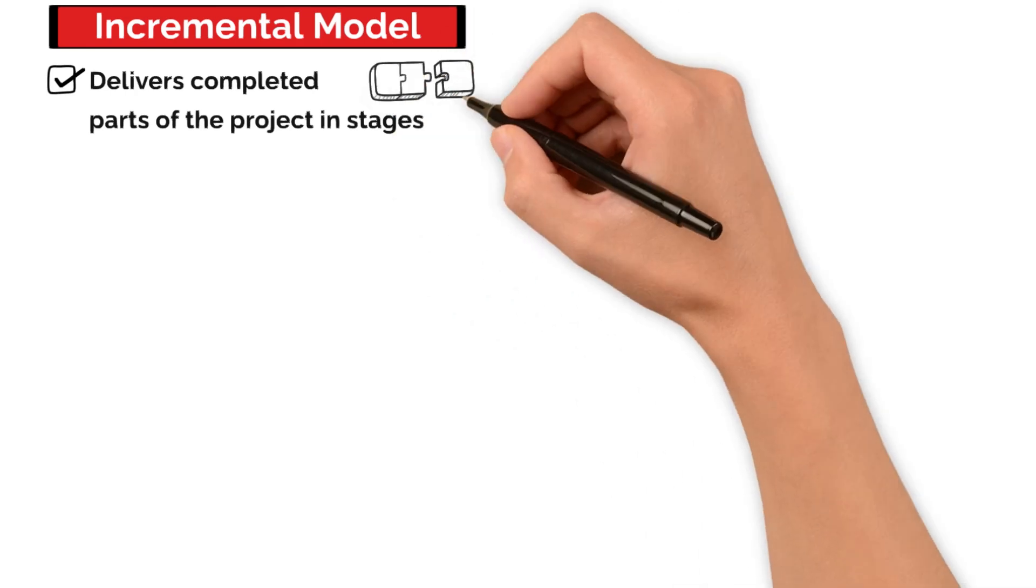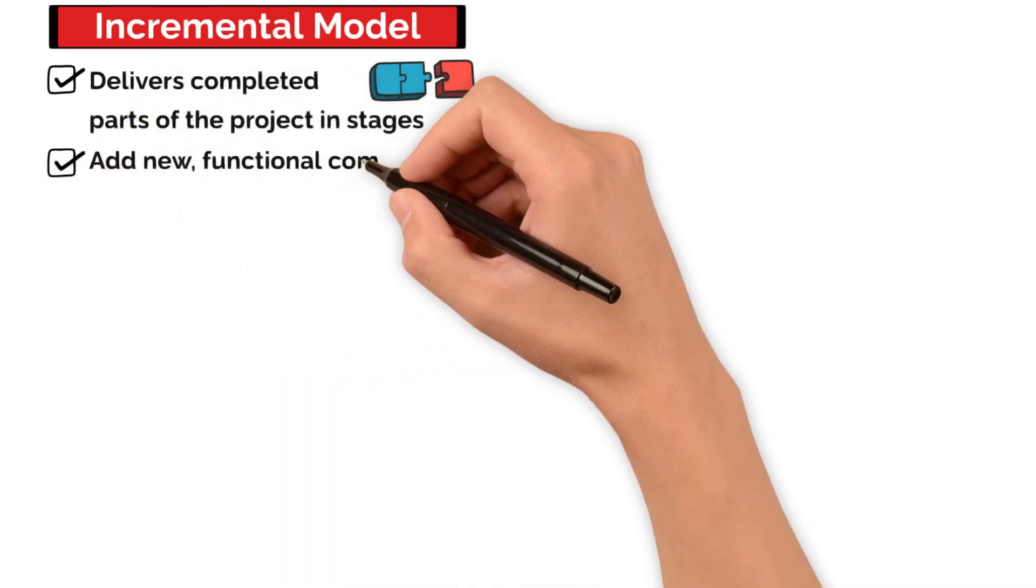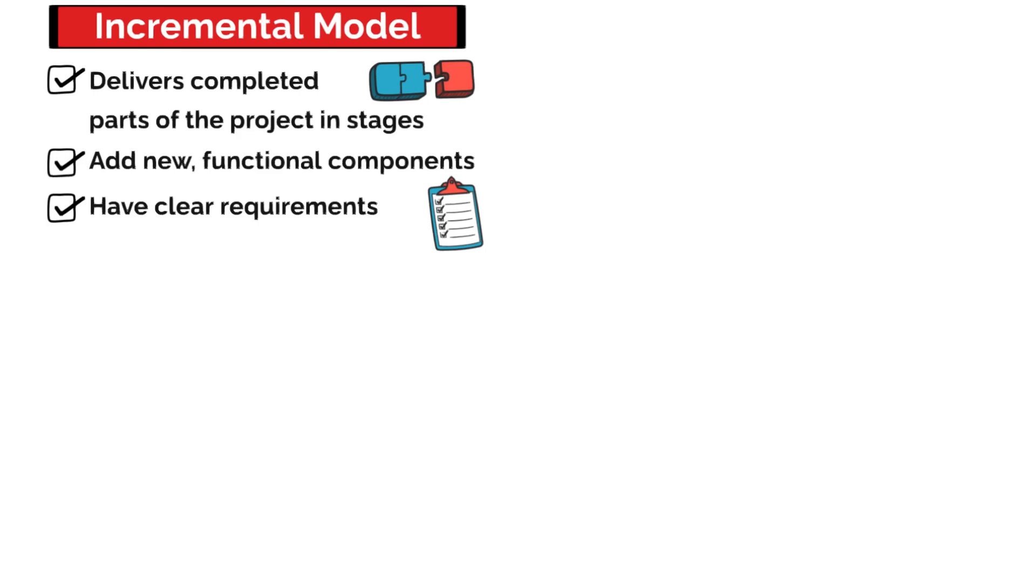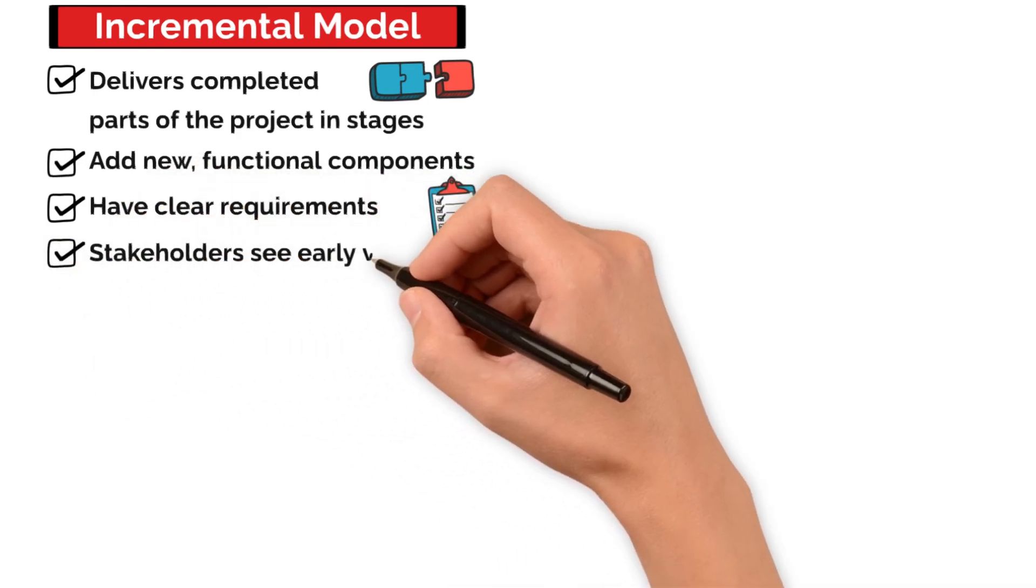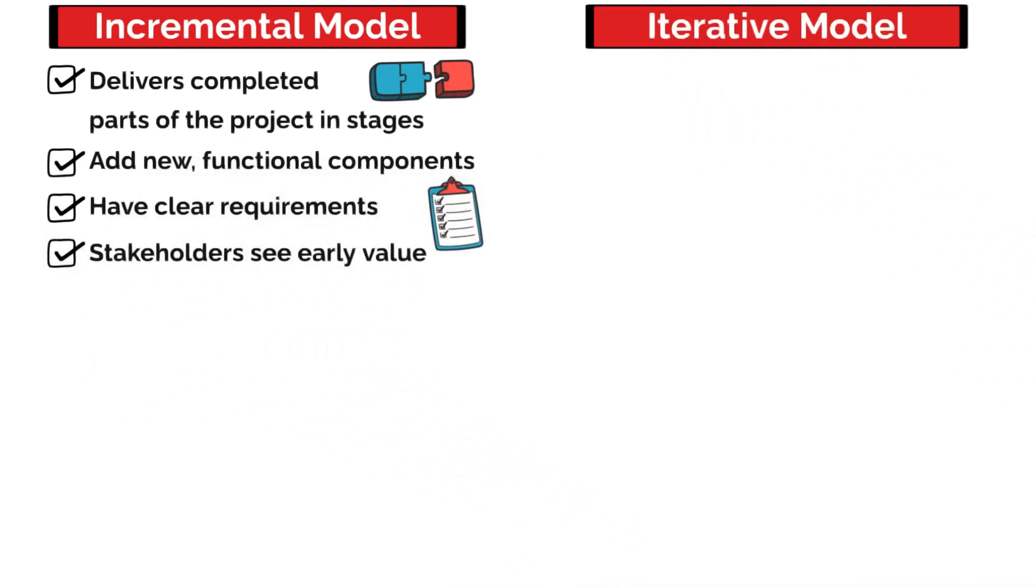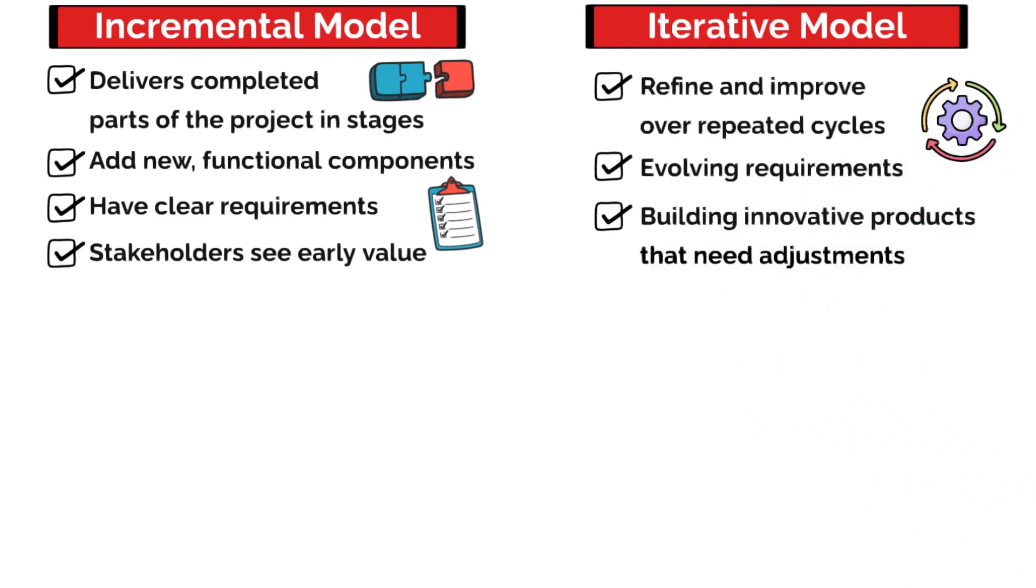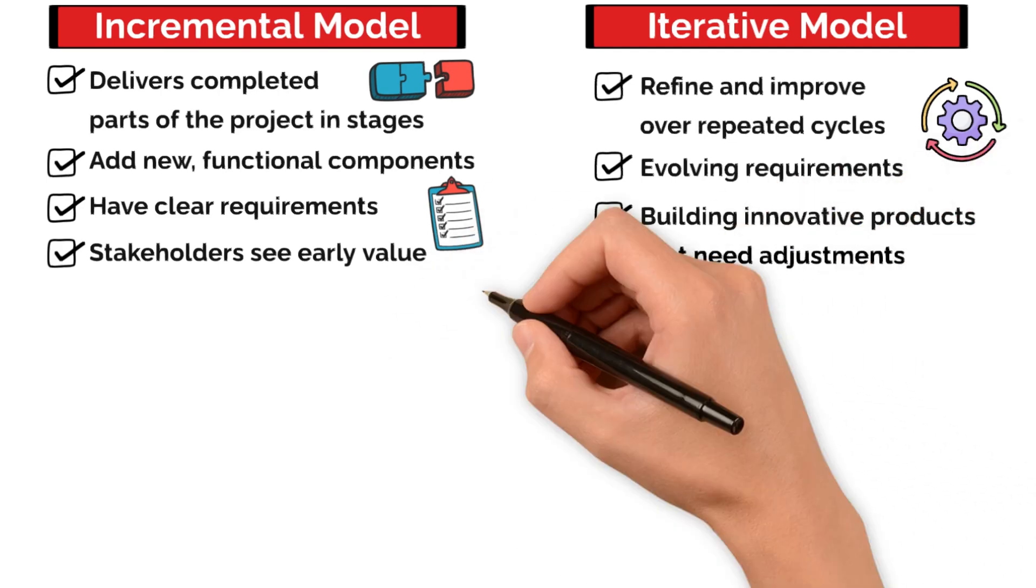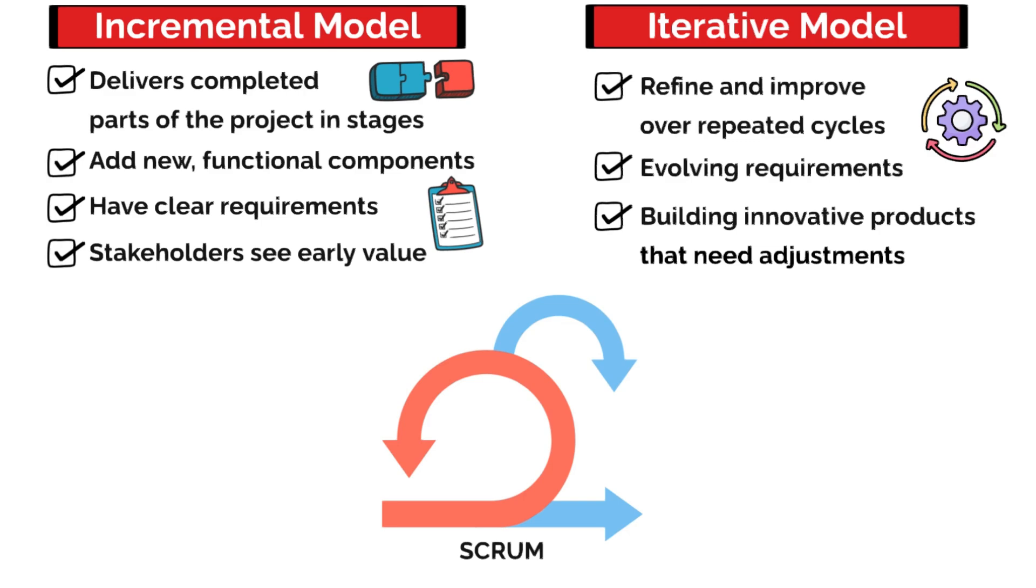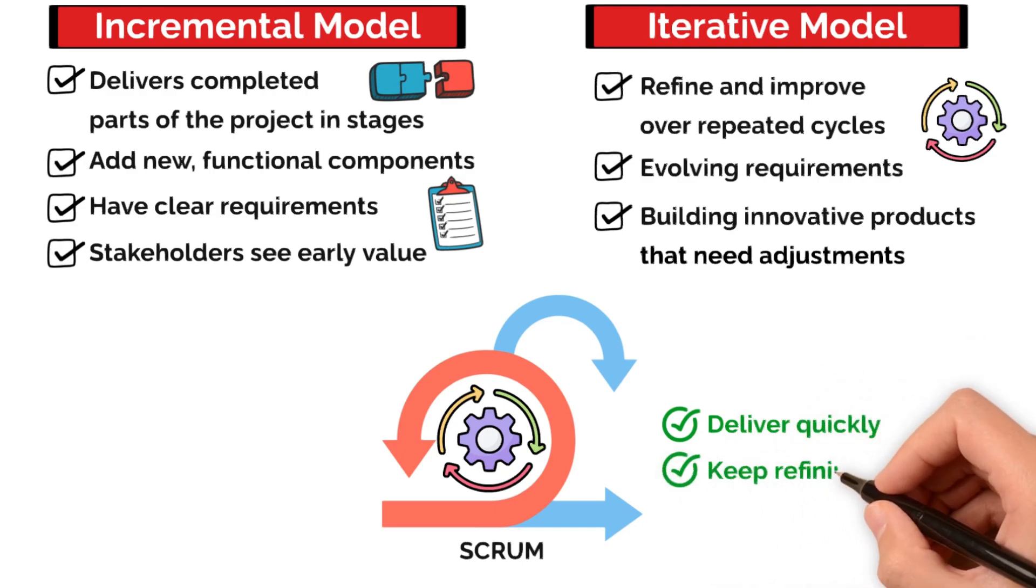To recap, here's the core of what we covered. The incremental model delivers completed parts of the project in stages, adding new, functional components each time. This model is ideal when you have clear requirements and want stakeholders to see early value in their project. The iterative model is about refinement and improvement over repeated cycles. It's great for projects with evolving requirements or innovative products that need adjustments along the way. And finally, agile methodologies like Scrum often use a blend of both to deliver a functional product that keeps improving with each sprint. It's the best of both worlds for teams looking to deliver quickly and keep refining as they go.